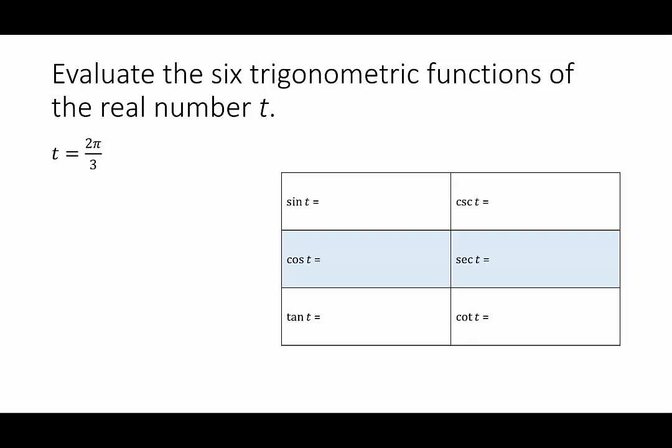In our next example, we're going to evaluate the six trigonometric functions of the real number t. So when we're looking at there are six trigonometric functions, we need three things. We need to know the radius, which in this case we know the radius is 1. And then we would need to know x and y. Now because the radius is 1, when we look at sine or cosine, we're always going to have something over 1. The question is what is that something?